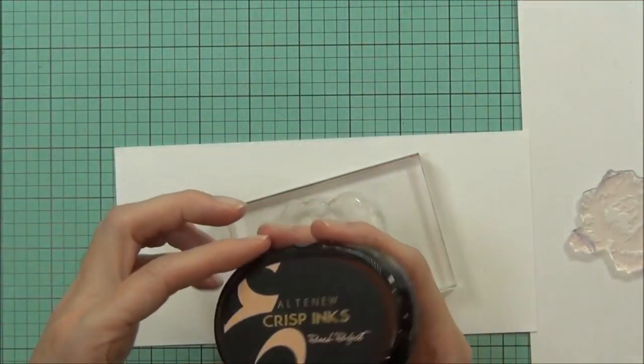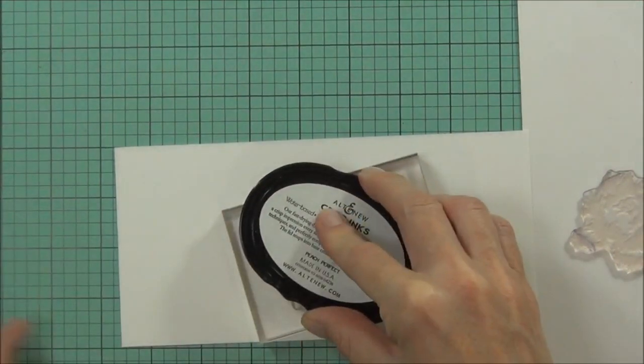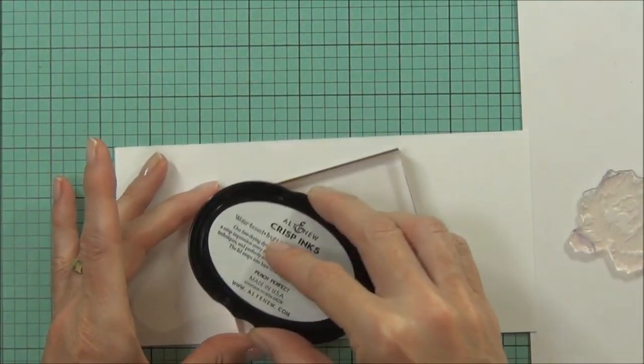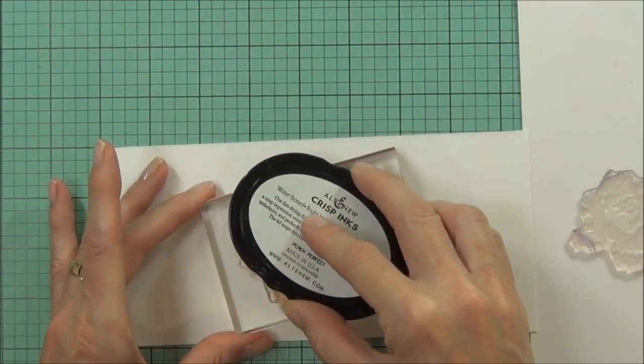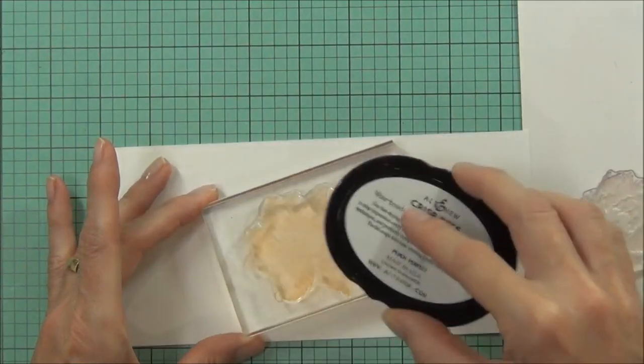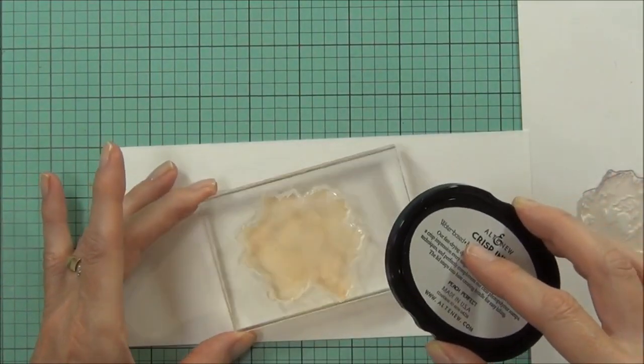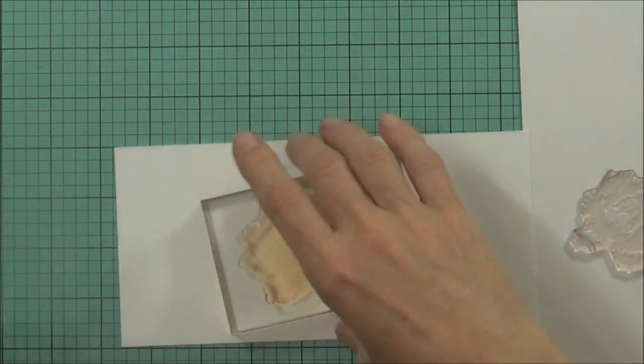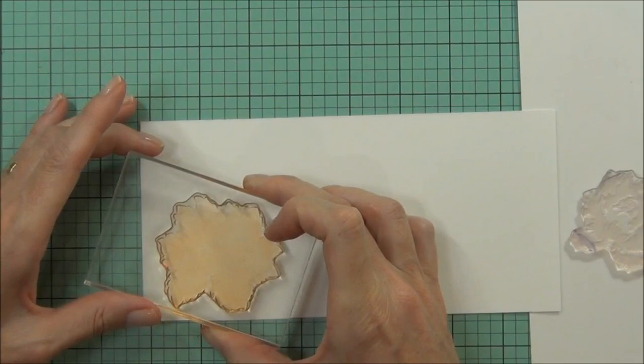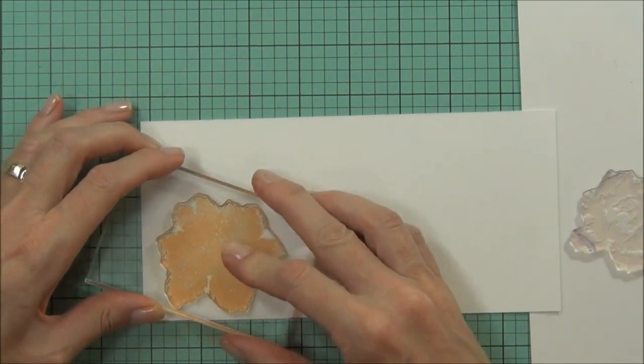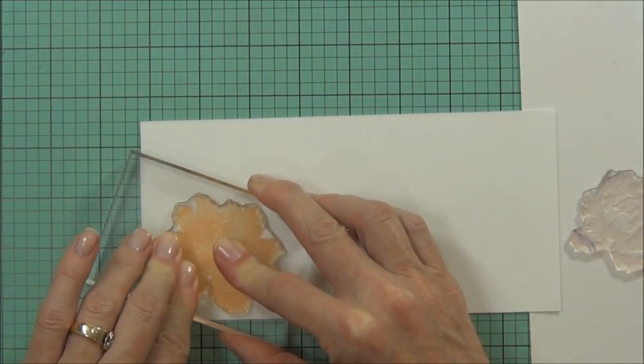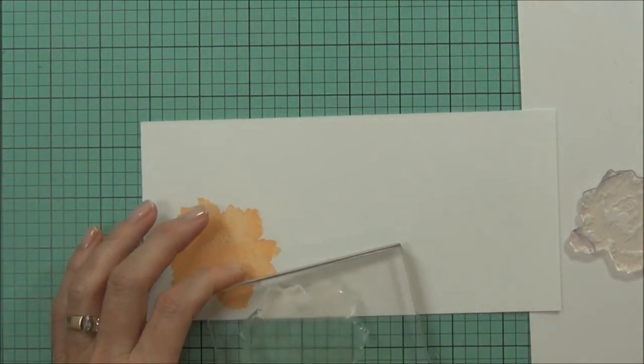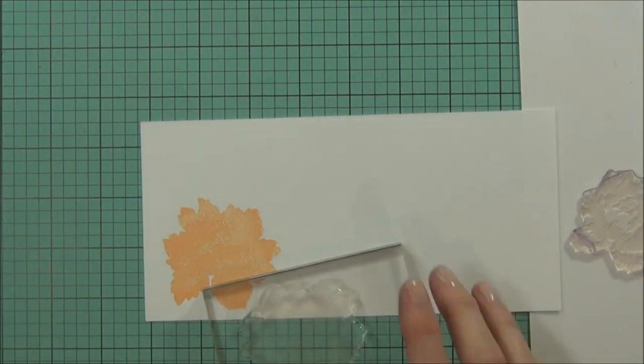I'm going to be using the Altenew crisp inks today. For my first layer of stamping, I like to use the solid image on the flowers. I've got some Peach Perfect ink and I'm going to stamp this out a couple of times because I want to show you a couple of variations. I'm just using some smooth white cardstock.